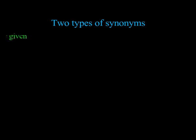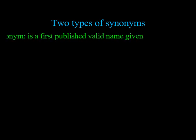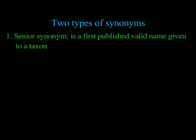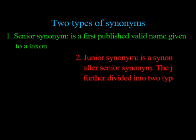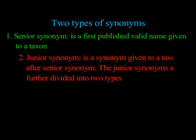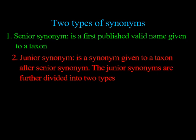The senior synonym is the first published valid name given to a taxon, while the junior synonym is a synonym given to a taxon after the senior synonym.